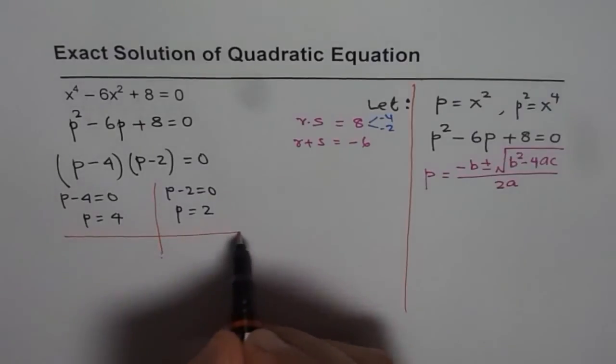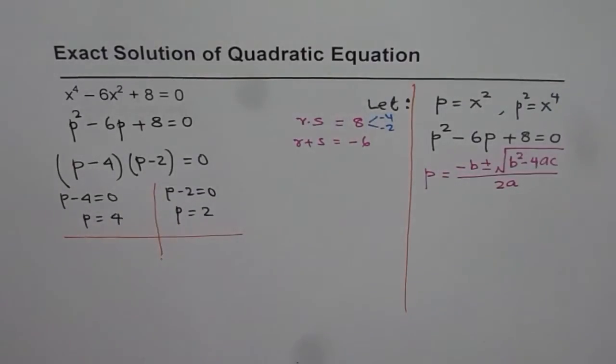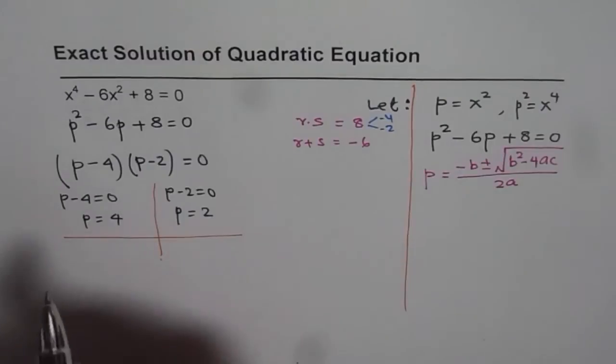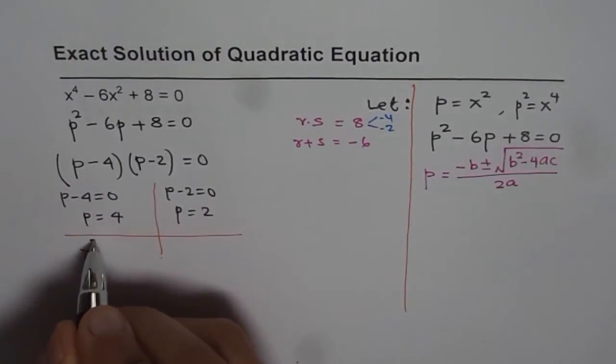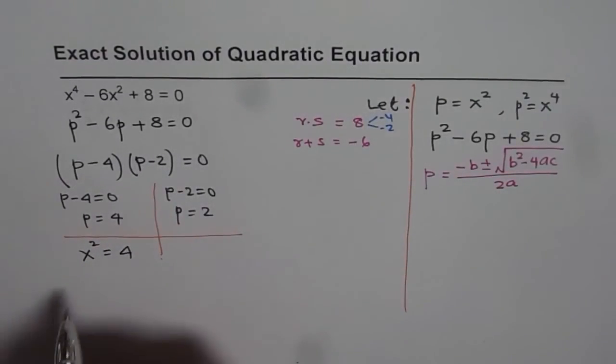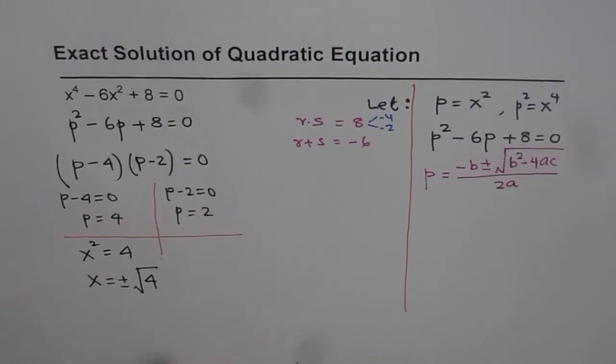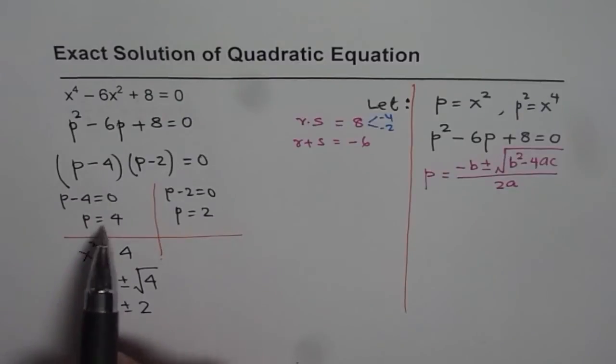we can substitute back p as x squared and find what the value of x could be. If we take p as 4 and we know p is x squared, then x squared equals 4. If x squared is 4, what is x equal to? x is plus or minus square root of 4, which gives us plus or minus 2. These are two answers we get from p equals 4.